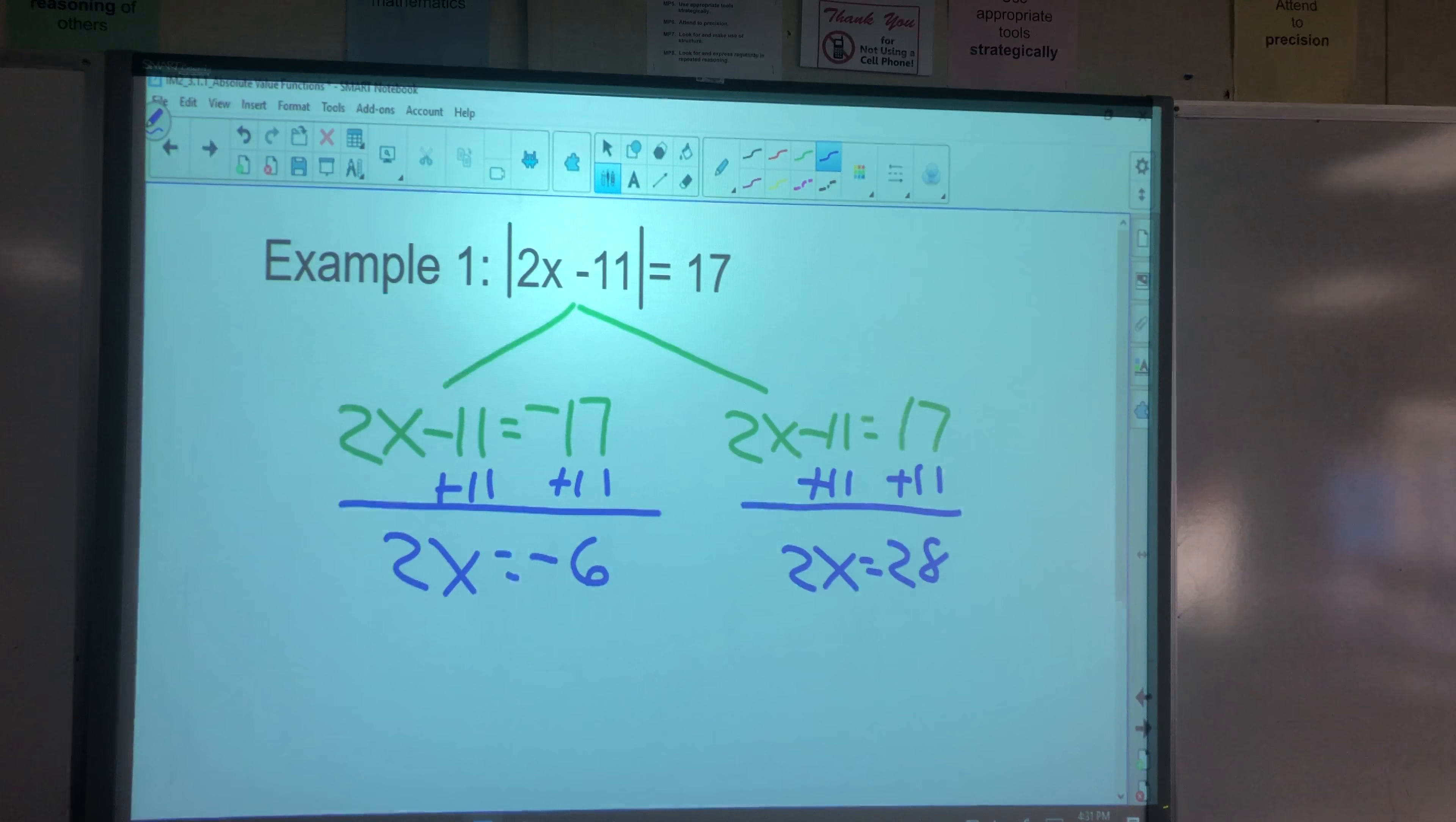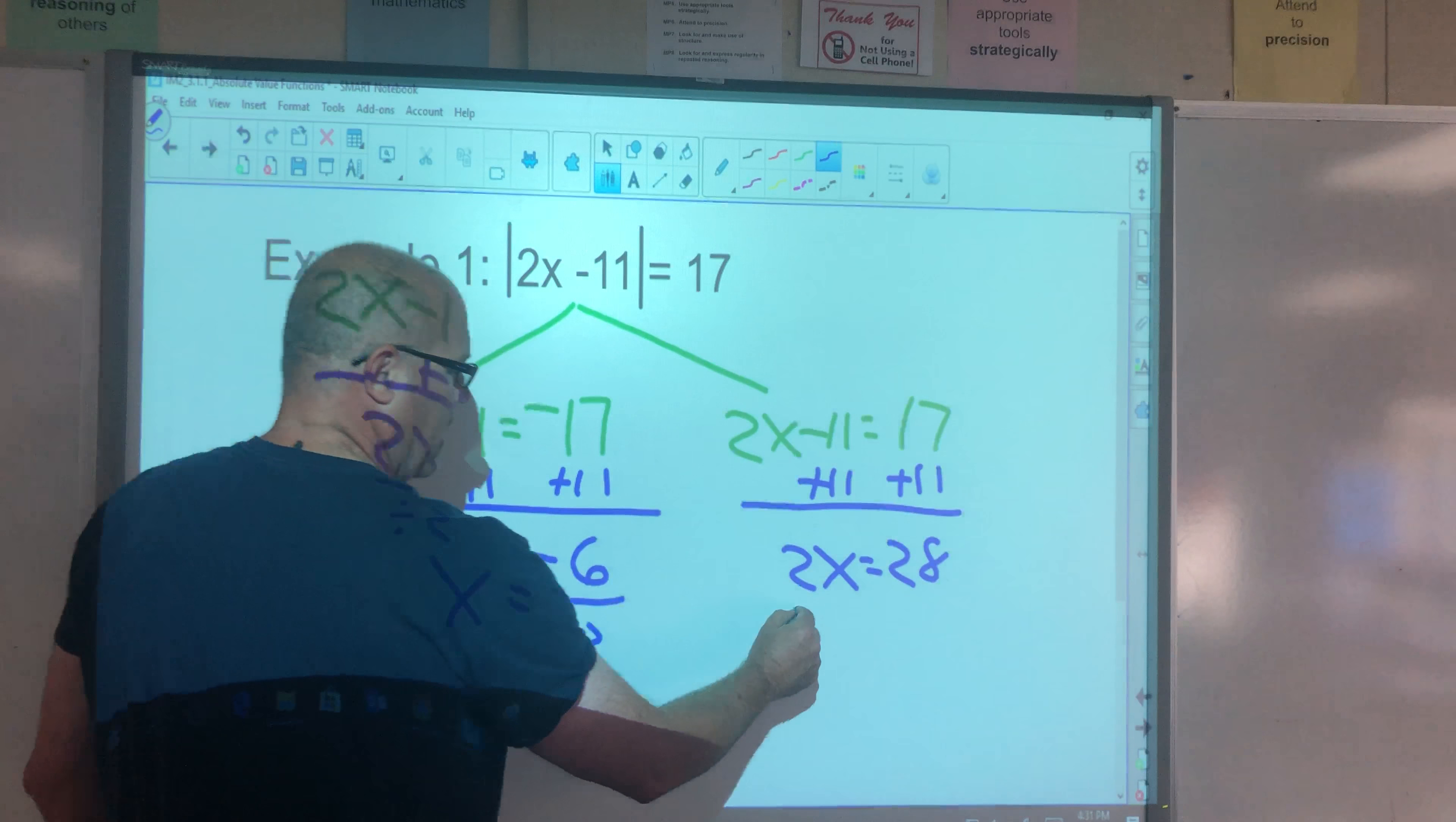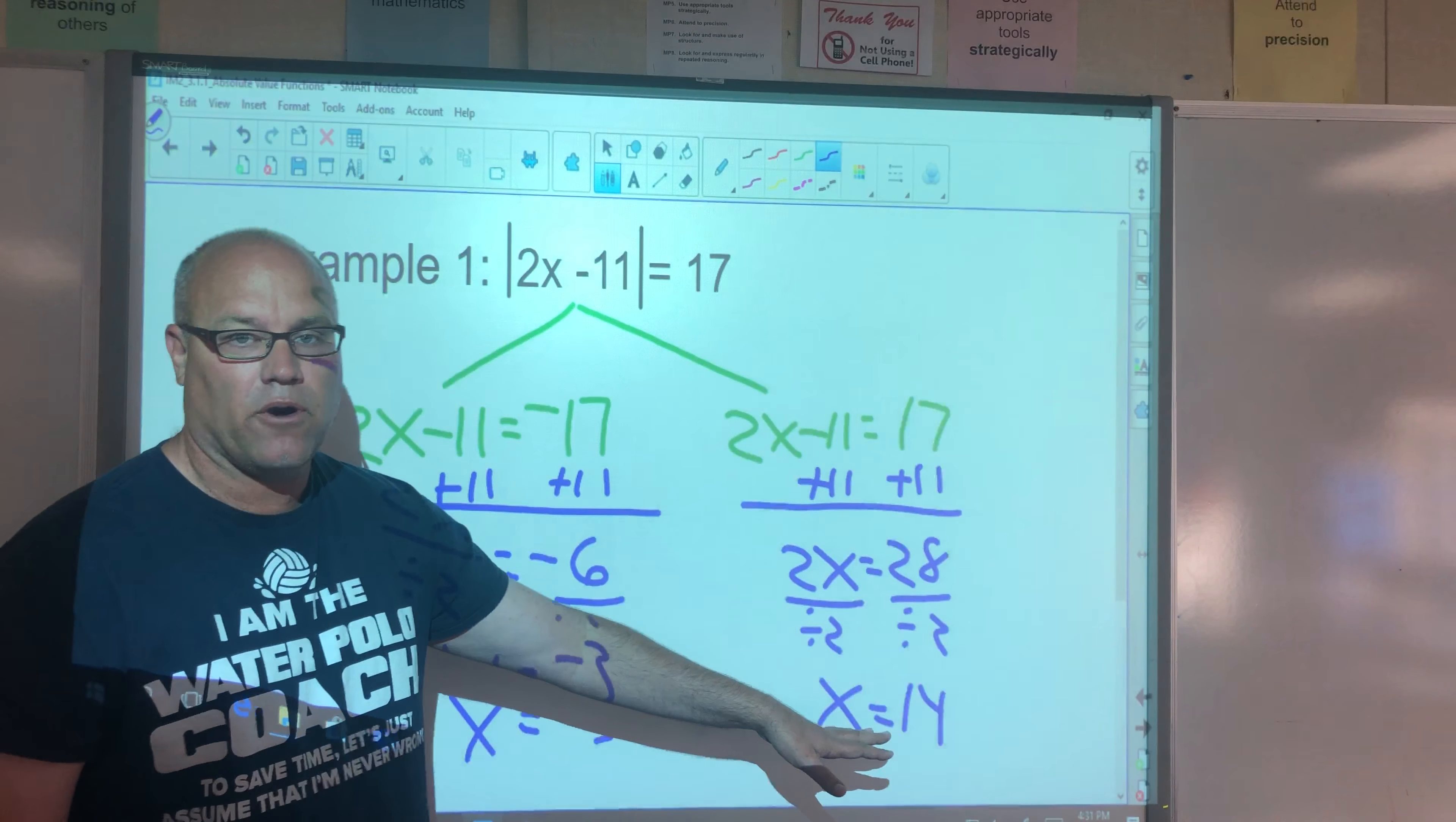So divide by 2. And I get x equals negative 3. This side, I divide by 2, divide by 2, and I get x equals 14. So we have two answers. It could be negative 3, or it could be 14.